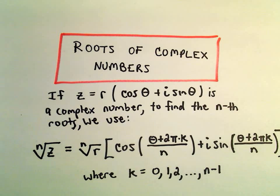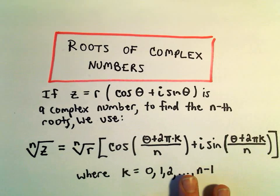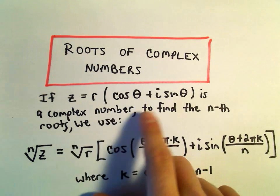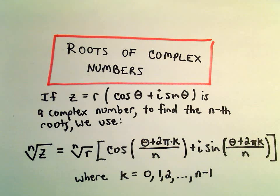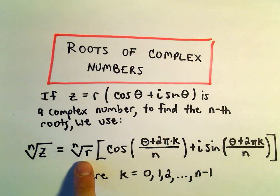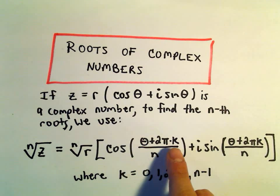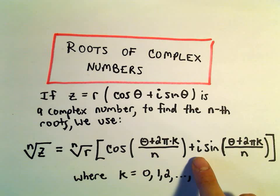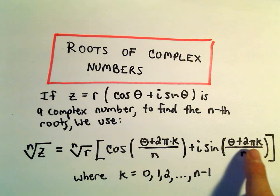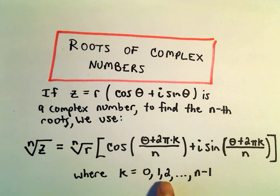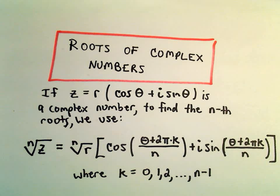In this video we're going to take a look at finding roots of complex numbers. The idea is: if you have a complex number in polar form, r times the quantity cosine theta plus i sine theta, to find the nth roots, we take our r value, take the nth root of that, and then calculate cosine of (theta plus 2π·k)/n plus i sine of (theta plus 2π·k)/n, letting k vary from 0, 1, 2, up to n minus 1.